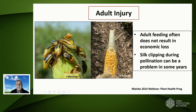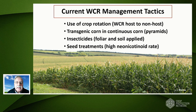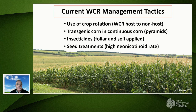This slide summarizes the tactics available today to manage the Western corn rootworm. Use of crop rotation from corn to a non-host such as soybeans, which the larvae can't survive on, is our number one recommendation. Transgenic corn is the number one tactic being used in continuous corn. Insecticides are still around — both foliar and soil applied. We also have some seed treatments, including a high neonicotinoid rate seed treatment that can be effective at lower population densities, but doesn't usually hold up at the higher densities seen in continuous corn.